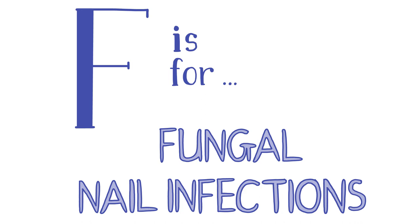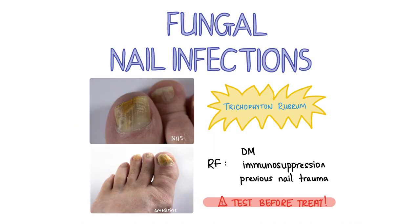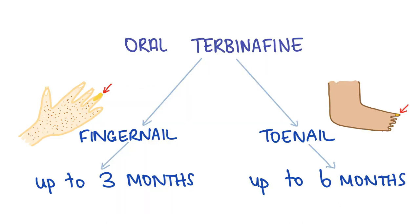F is for fungal nail infections. Onychomycosis is usually caused by dermatophytes, mainly Trichophyton rubrum. Risk factors include diabetes mellitus, immunosuppression or previous nail trauma. You cannot treat before microbiology confirmation of the diagnosis, so it's essential to send nail clippings and scrapings of the affected nail for microscopy and culture. No management is necessary if the patient has no concerns and is not affected by symptoms. However, if symptoms are problematic, oral terbinafine is currently recommended first line for dermatophyte infections. Treatment must be given for up to three months for fingernail infections and up to six months for toenail infections, to allow time for the nail to grow out completely.